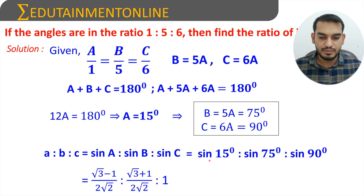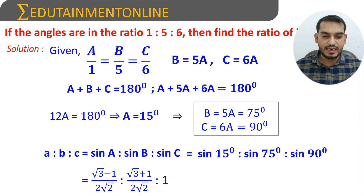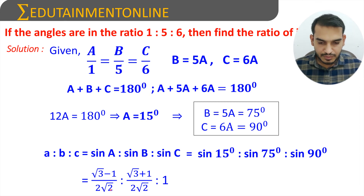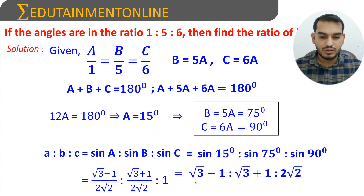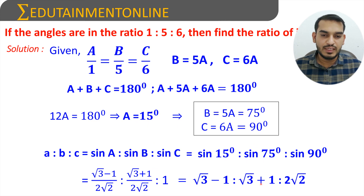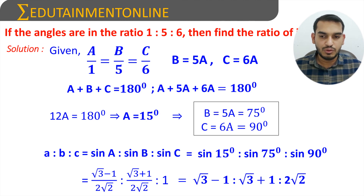Substituting into the ratio: sin 15° : sin 75° : sin 90° = (√3 − 1)/(2√2) : (√3 + 1)/(2√2) : 1. Multiplying through by 2√2 to clear the denominators, the ratio of the sides is √3 − 1 : √3 + 1 : 2√2.